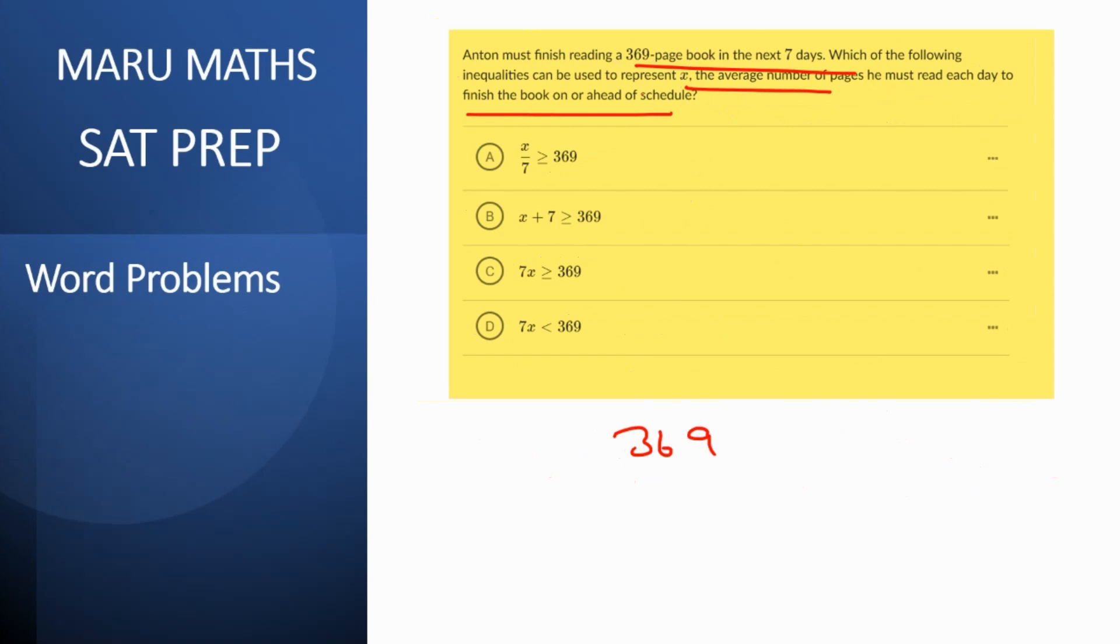So 369 is the total number of pages and if he has to read x pages per day then the x pages per day have to be more than the time allocated. So here we're saying seven days times the number of pages he reads every day should be greater than or equal to 369. So your answer should be option c.